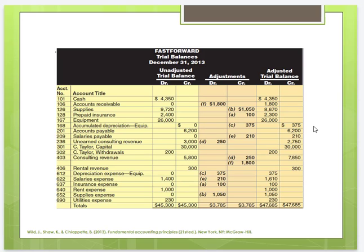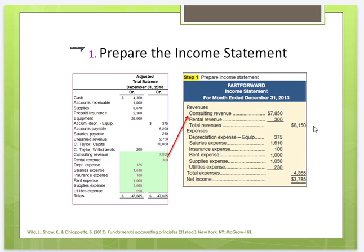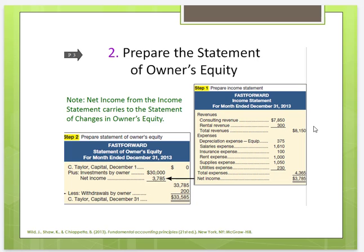We can then use our adjusted trial balance to prepare our financial statements. Here we see how the numbers from the adjusted trial balance flow to the income statement. You can see our revenues as well as the expenses. Our net income from the income statement then flows to our statement of owner's equity — sometimes called the statement of stockholders' equity or even the statement of retained earnings.